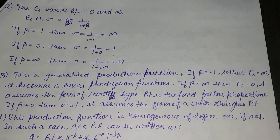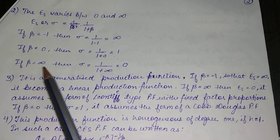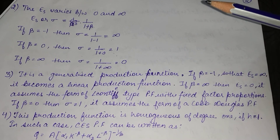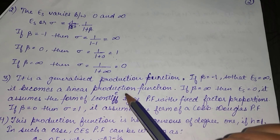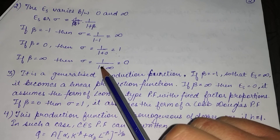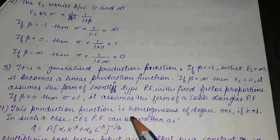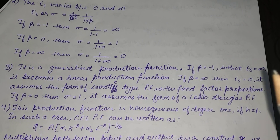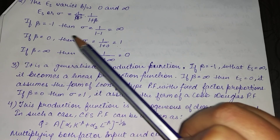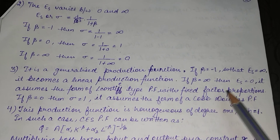The third property follows from the second. When β = −1, elasticity of substitution is infinity and the CES production function becomes a linear production function. When β = ∞, elasticity of substitution is 0 and the CES production function assumes the form of the Leontief type production function with fixed factor proportions. When β = 0, elasticity of substitution is 1 and the CES production function assumes the form of the Cobb-Douglas production function.